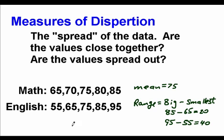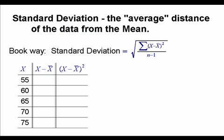And that's what we want to talk about with measures of dispersion. And the first one we're going to really get into is called the standard deviation. The standard deviation is basically the average distance of the data from the mean. And the book way of doing the standard deviation is this ugly formula. And it's not really that bad.